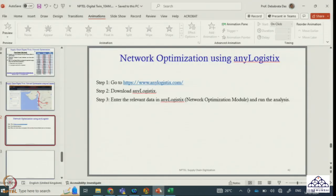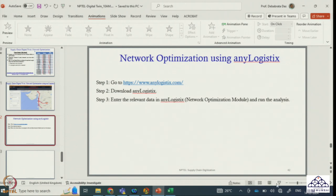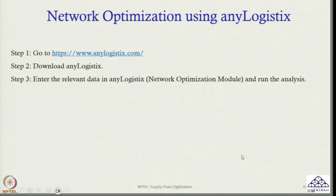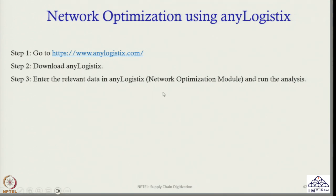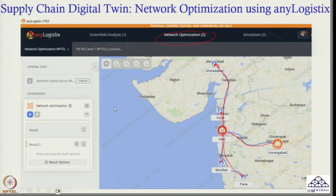Everything can be visualized nicely using anyLogistix software. These are the advantages, and this is how you can form a supply chain digital twin for network optimization. I am sure you got the idea of how a digital twin can be formed. If you run this using anyLogistix software, you will get similar results as shown. We will stop today's class here. Thank you so much, look forward to seeing you in the next class.